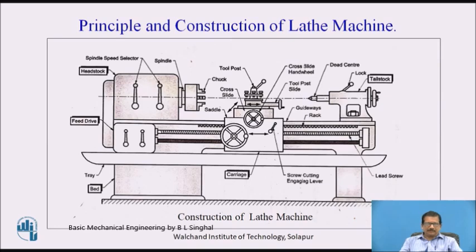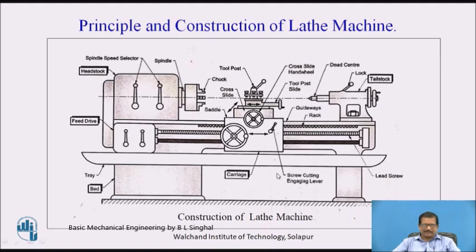Now, if you observe the sketch, the construction of lathe machine is divided into three main elements — that is headstock, tailstock, and in between these two there is a carriage — which are all mounted on the bed. So this is called the bed of the lathe machine.